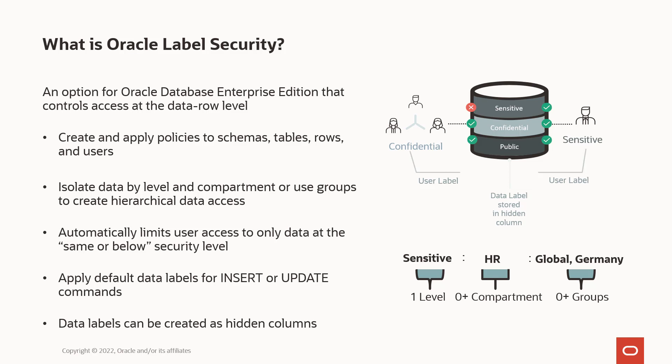Label Security allows you to isolate data by level, and optionally by compartment, or use label security groups to create a hierarchical data access standard. Oracle Label Security automatically limits a user's access to only the data at or below their security level, and can automatically apply data labels to insert or update statements, helping you ensure your data is controlled when it is first created or upon update.